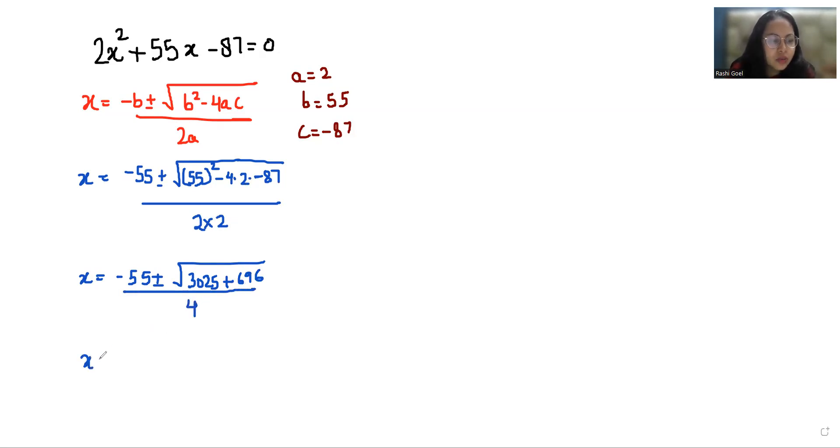So x equals negative 55 plus or minus under root 3721 by 4.